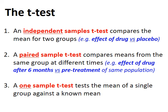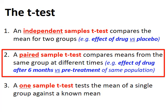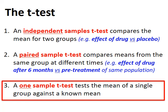There are three main types of t-test. The first is the independent samples t-test, which compares the mean values for two different groups — for example, patients given anti-cancer medication versus those given a placebo. The second is the paired sample t-test, which compares mean values from the same group at different times, such as pre-treatment versus six months after treatment. The third is the one sample t-test, which tests the mean value of a single population against a known predetermined value.